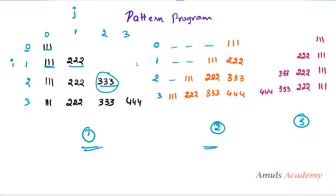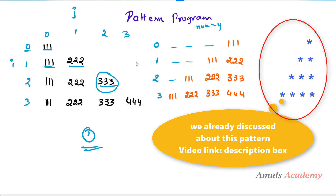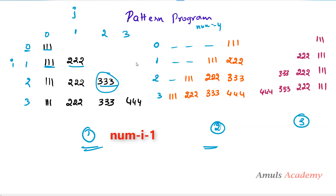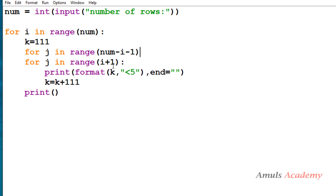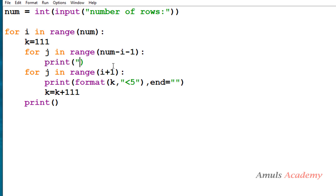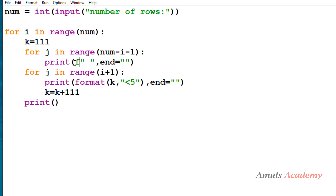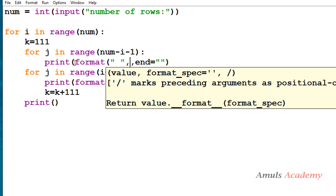When row equals 3, I want 0 spaces — with number of rows being 4. I previously used the formula num minus i minus 1 for printing stars in this shape. So num = 4, i = 0: 4 - 0 - 1 = 3 spaces. When i = 1: 4 - 1 - 1 = 2 spaces. When i = 2: 4 - 2 - 1 = 1 space. So the formula num - i - 1 works here. I print a space character using end='' and apply the same format width to keep alignment.